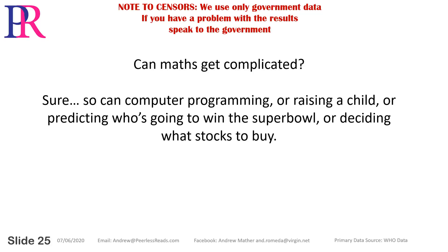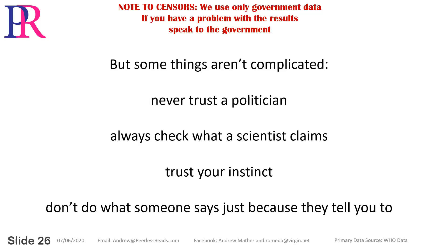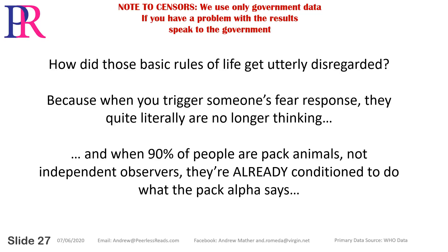Can maths get complicated? Sure — so can computer programming, raising a child, predicting who's going to win the Super Bowl, or deciding what stocks to buy. But some things aren't complicated: never trust a politician, always check what a scientist claims, trust your instinct, don't do what someone says just because they tell you to. How did these basic rules of life get utterly disregarded?